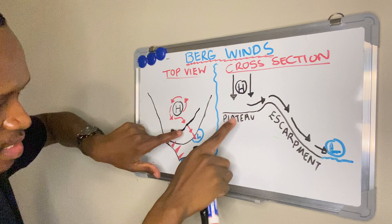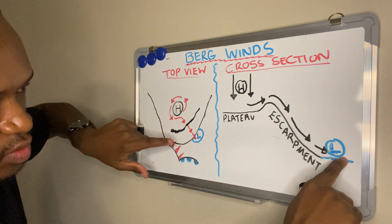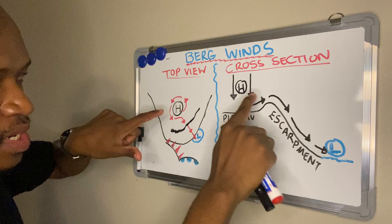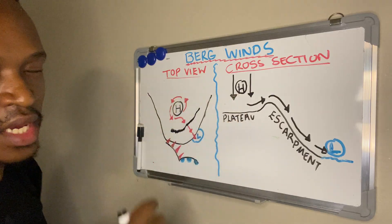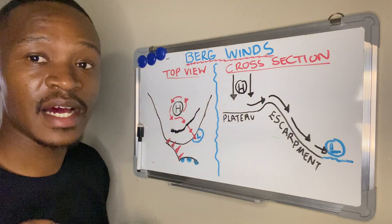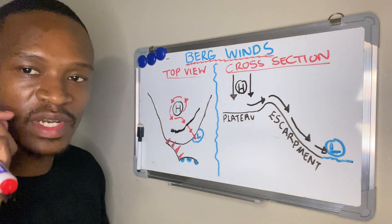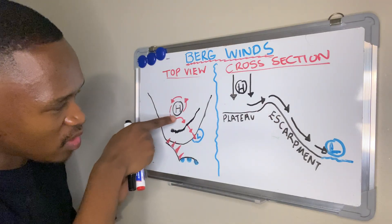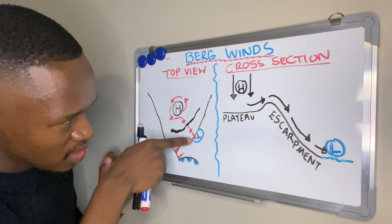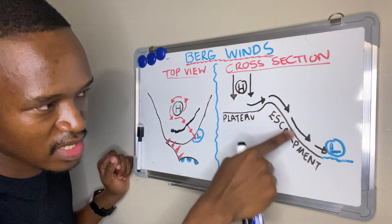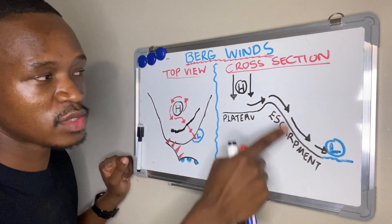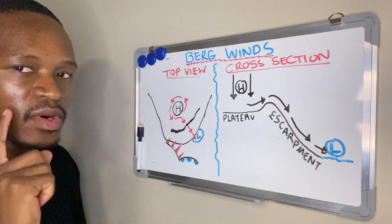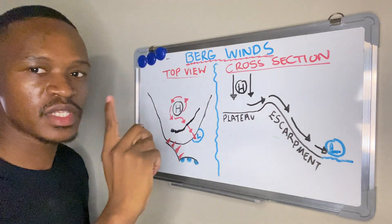The coastal low is on the coast, and the Kalahari High — also known as the continental high — is on the interior. The arrows go from the high towards the low, because winds always blow from high pressure towards low pressure.